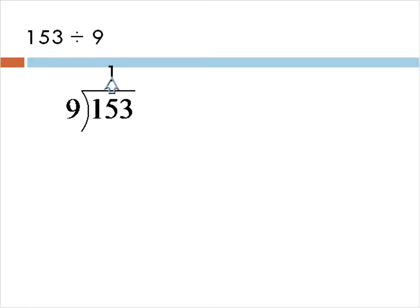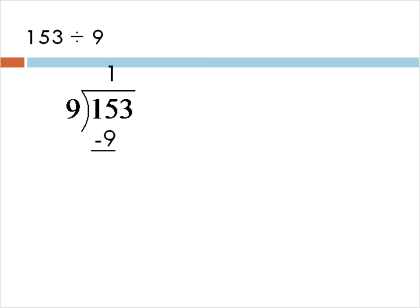So we have the 1 up top. To find out what's left, we'll multiply 1 times 9, and that gives us 9. Then we subtract to find the difference. 15 minus 9 is 6. So that's telling us that 9 goes into 15 one time, and there's 6 left over.